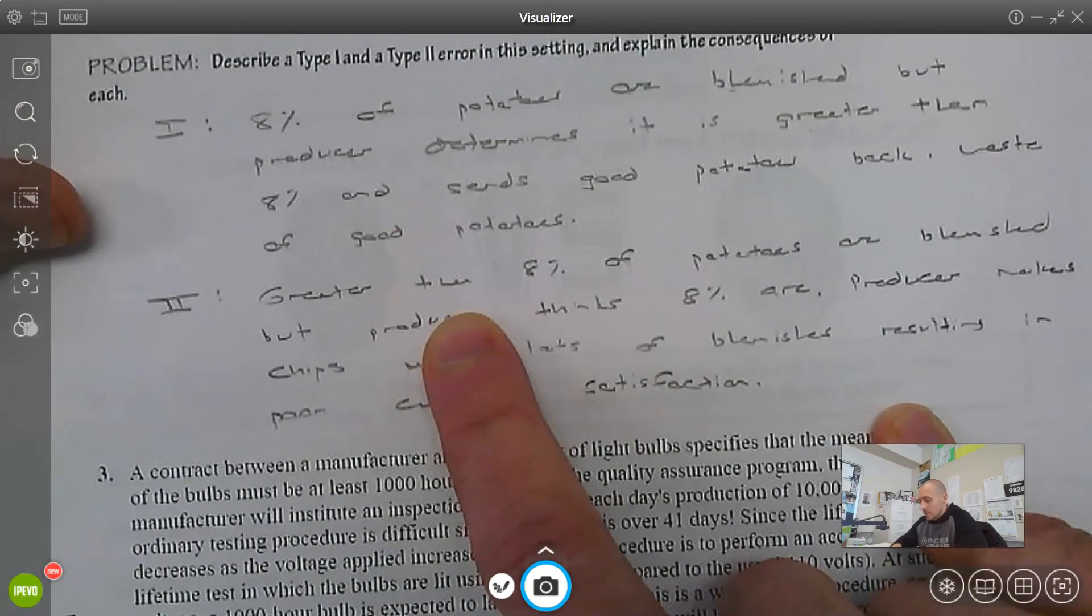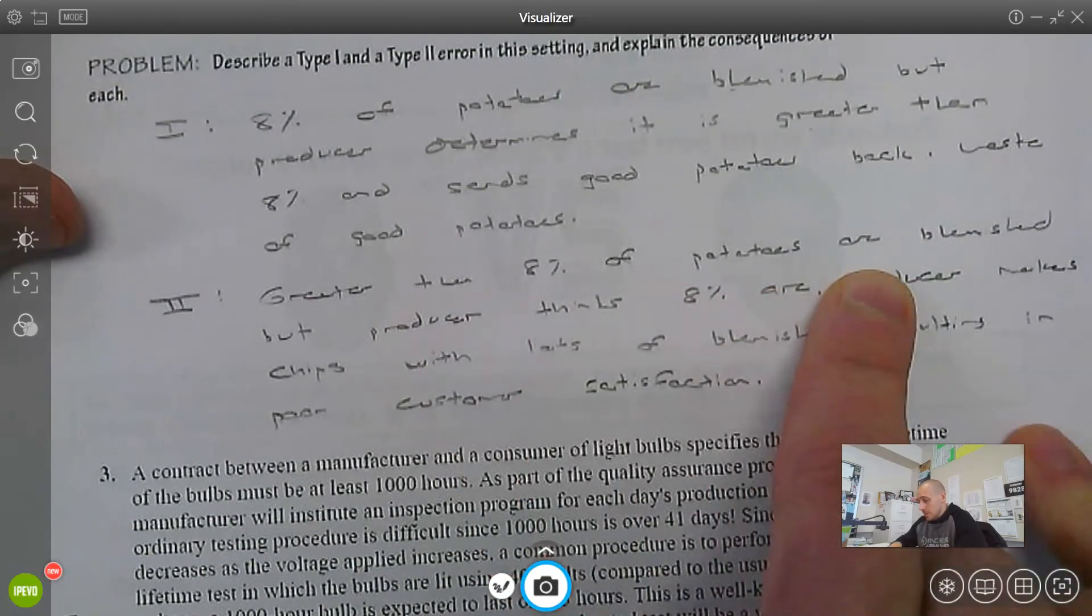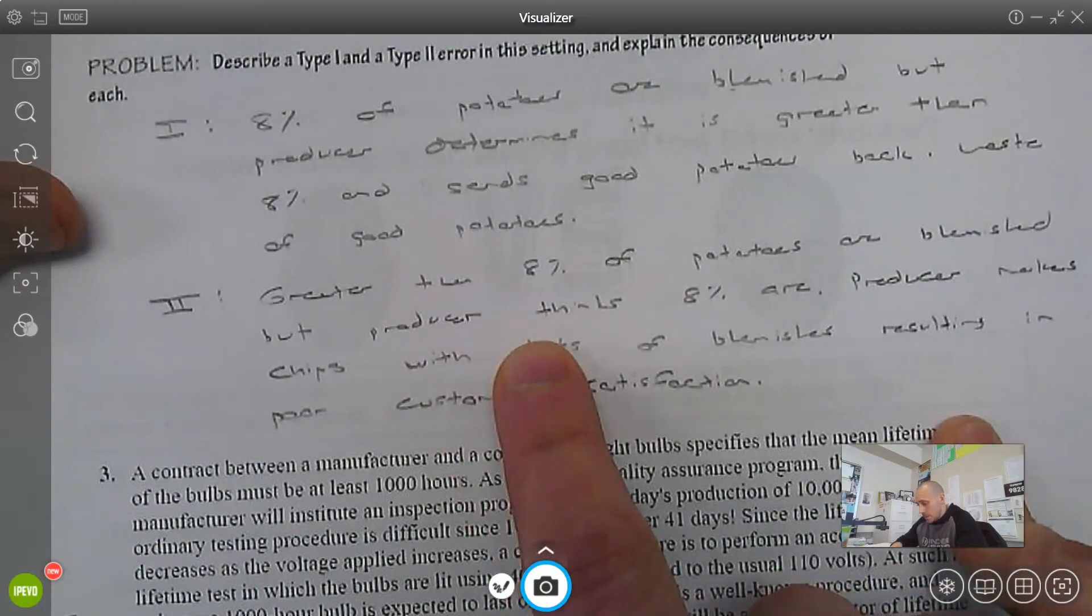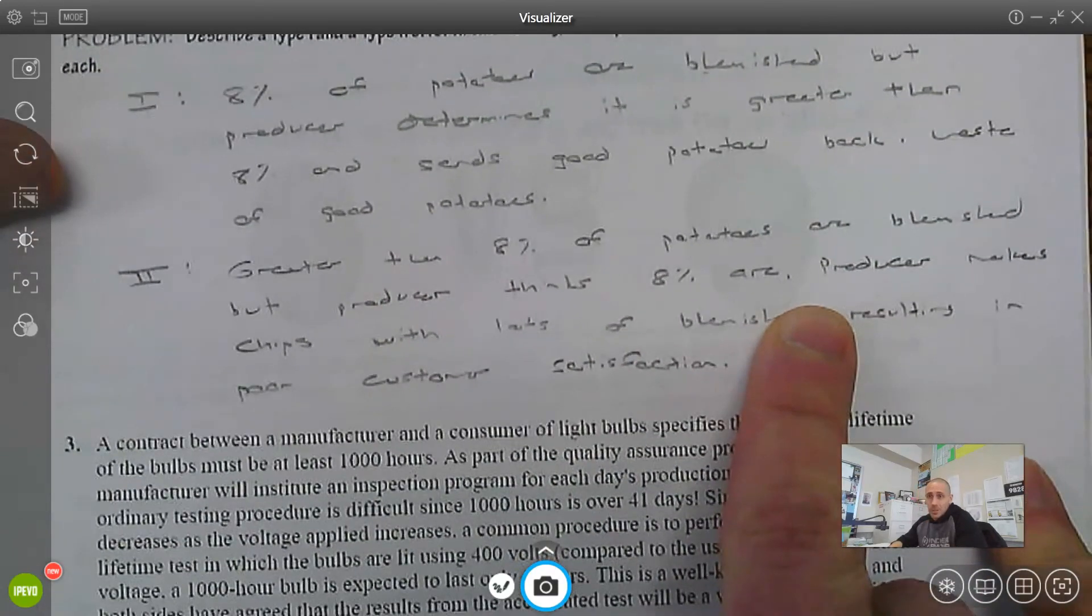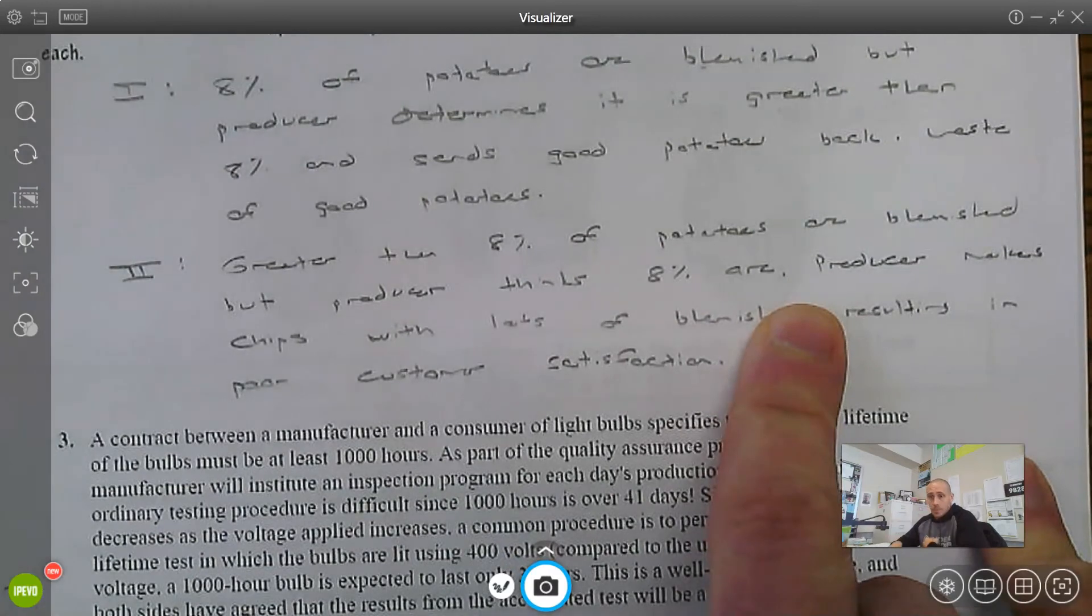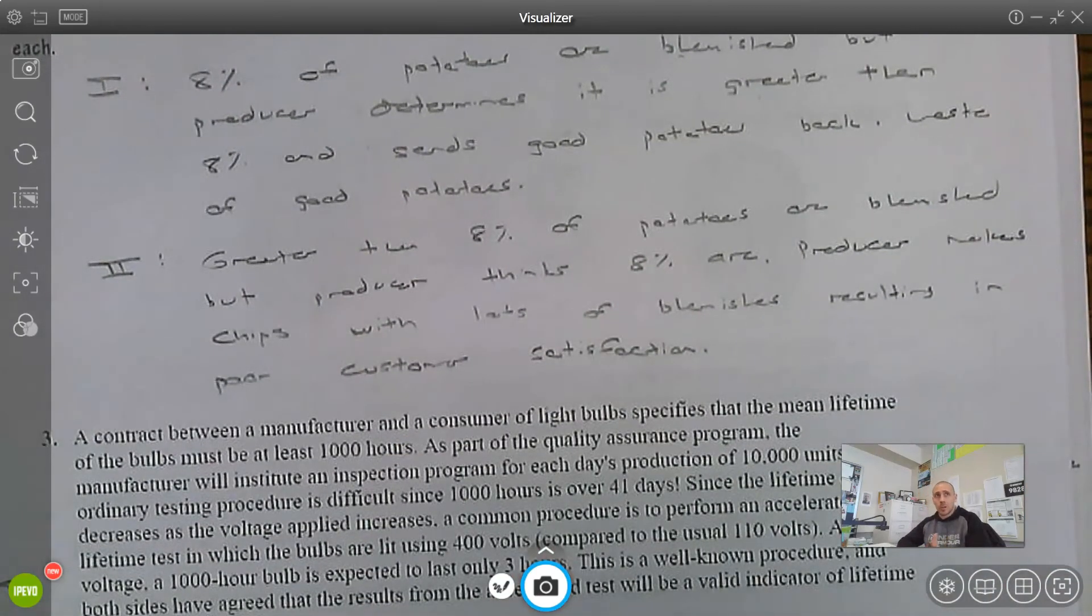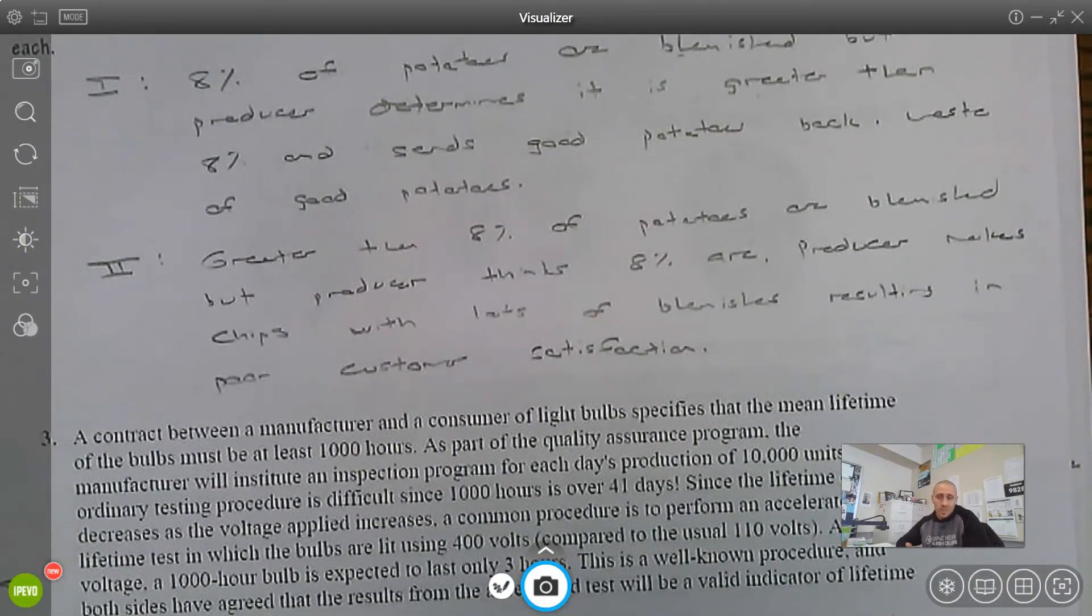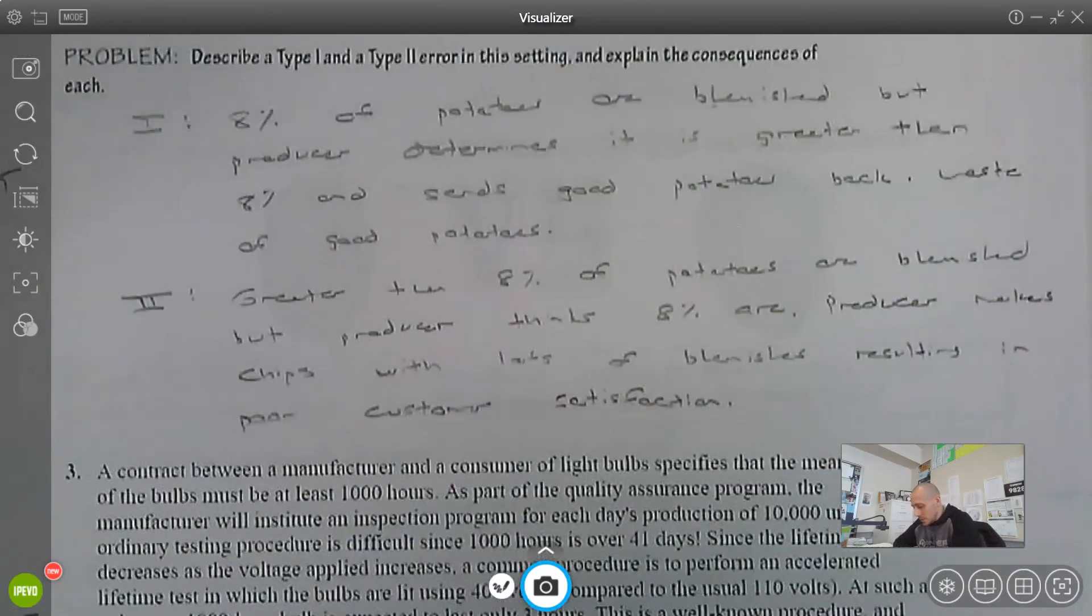Type 2 error, I'm talking about the alternative being true, so greater than 8% of the potatoes are blemished, but we think 8% are. So what do we do here? We accept a bad load of potatoes, and the chips that we make are probably going to have a lot of blemishes on them and result in poor customer satisfaction. They're like, these chips are nasty, I don't want to buy these.